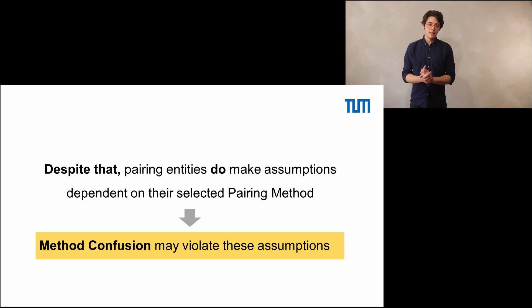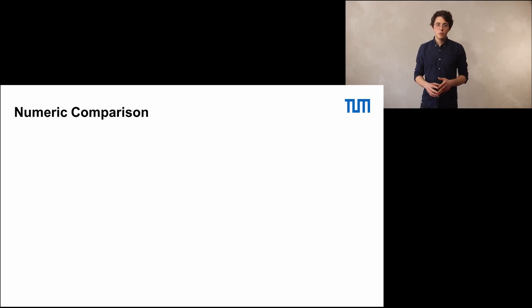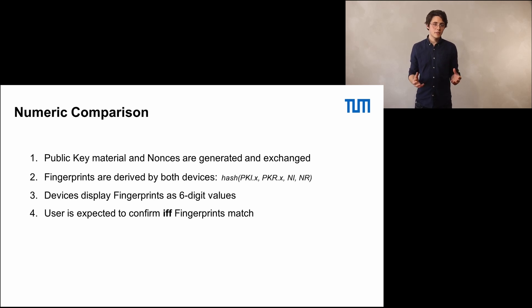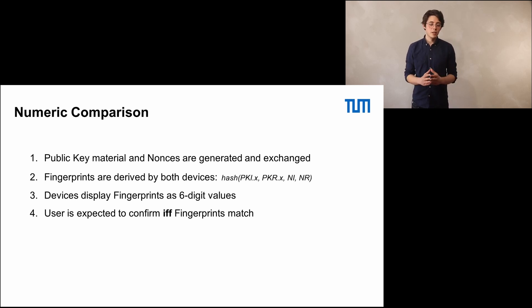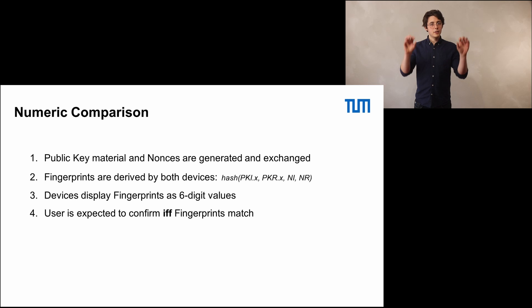So let's look at a practical example of that. We will look into two pairing methods of Bluetooth and their assumptions. First there is numeric comparison. Numeric comparison works basically like this: two devices both generate public-private key pairs and some nonces and exchange them. Then to derive some key from this public key material, we need to authenticate it. This works by both devices generating a hash value in the shape of a six-digit decimal value of this key material, and displaying it on their screens.